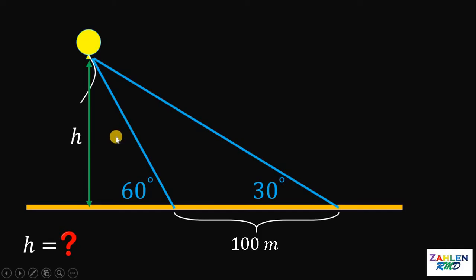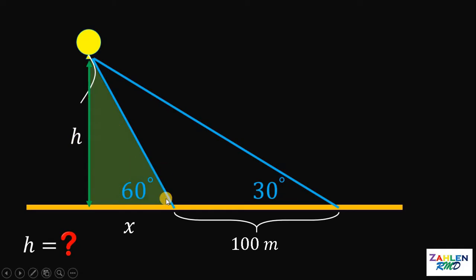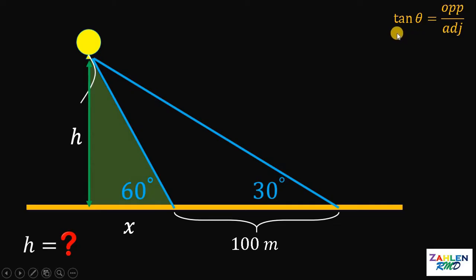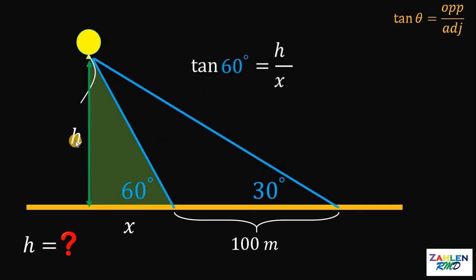To answer this question, let's consider first this distance and let this side be equal to x. Let's consider this right triangle right here. We have 60 degrees, the adjacent side of the 60 degrees is x, and the opposite side of the 60 degrees must be h. Recall that the trigonometric function relating the angle, the opposite side, and the adjacent side is the tangent function: tangent theta equals opposite over adjacent. Therefore, tangent 60° = h/x.